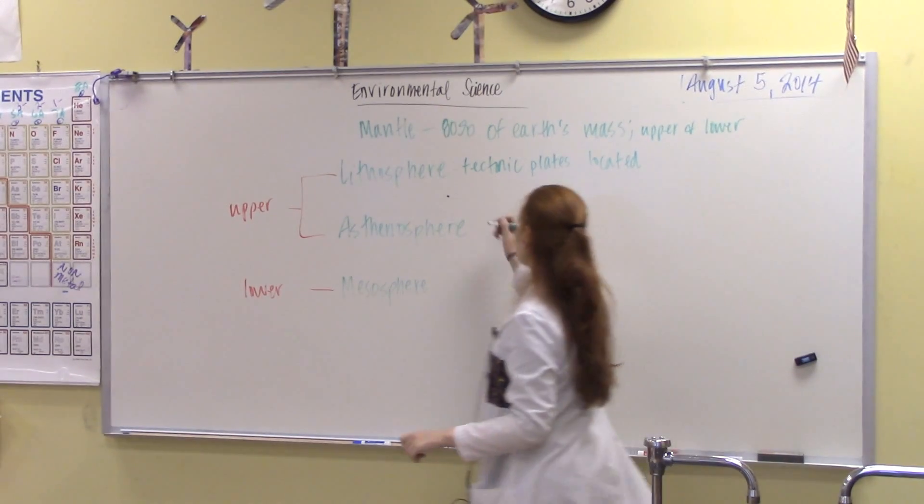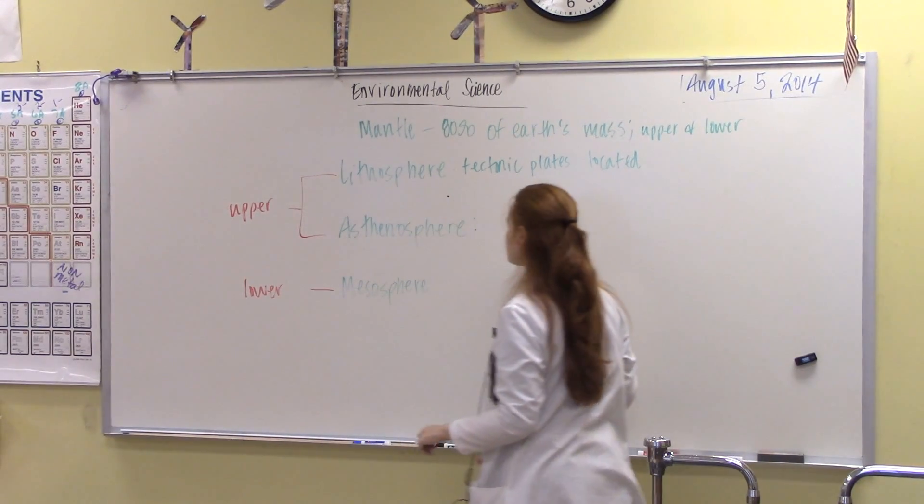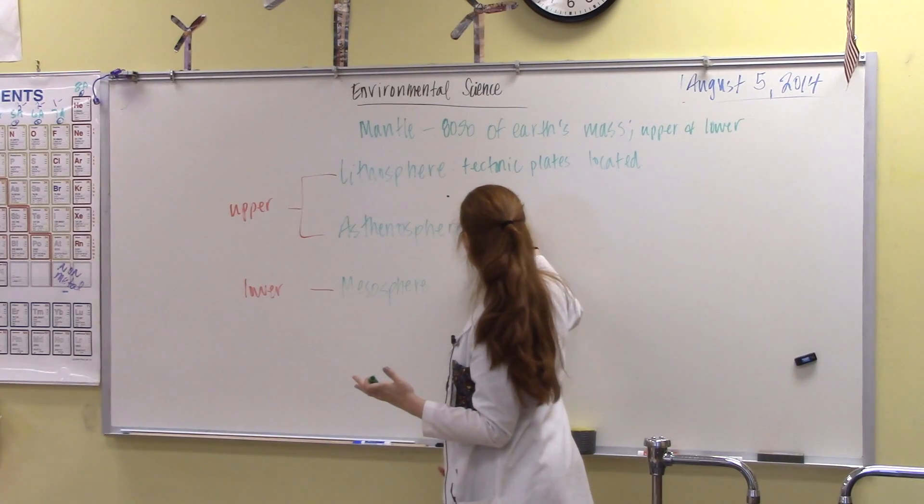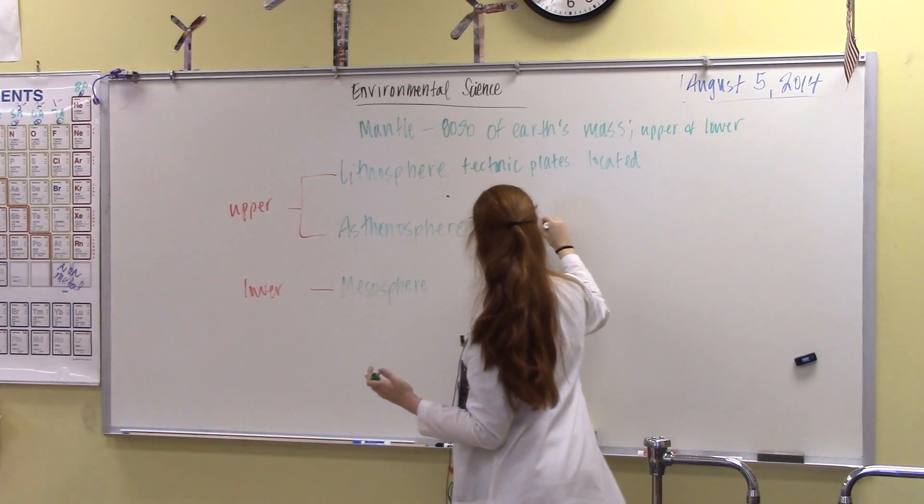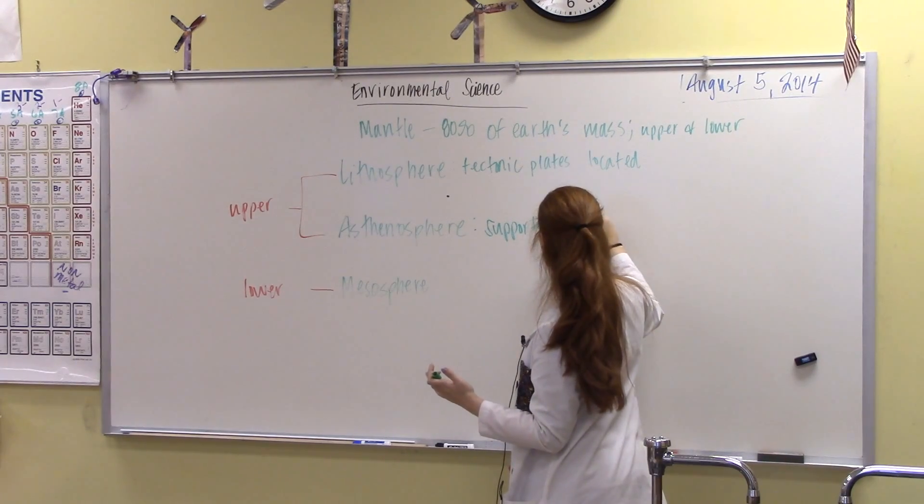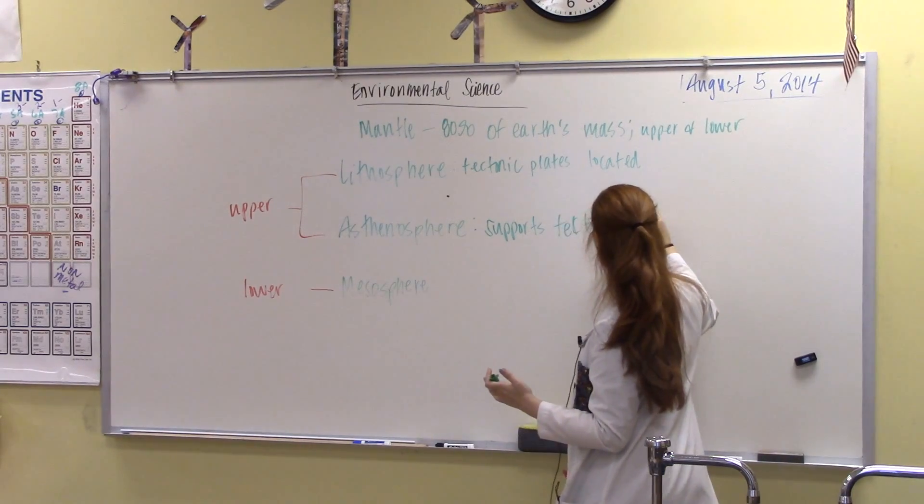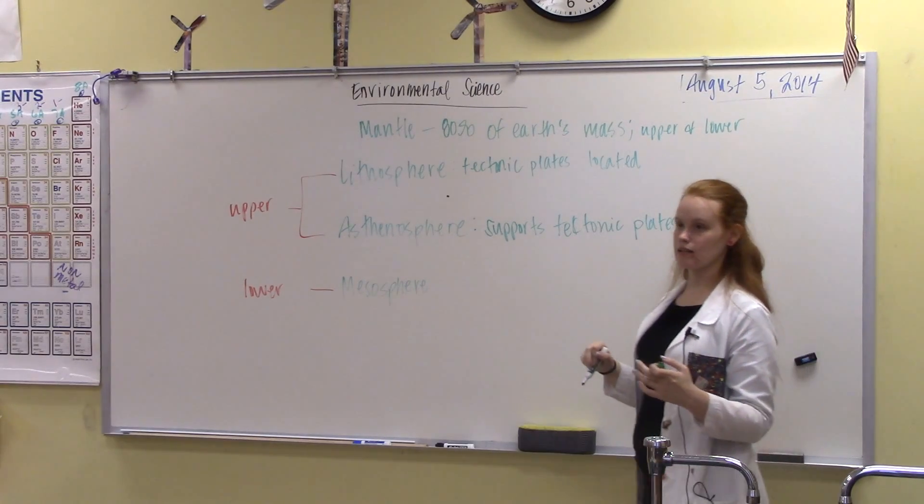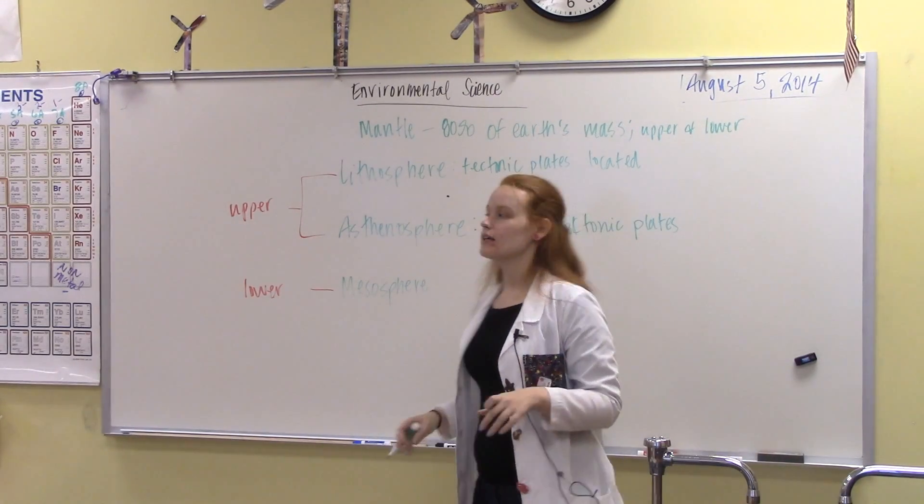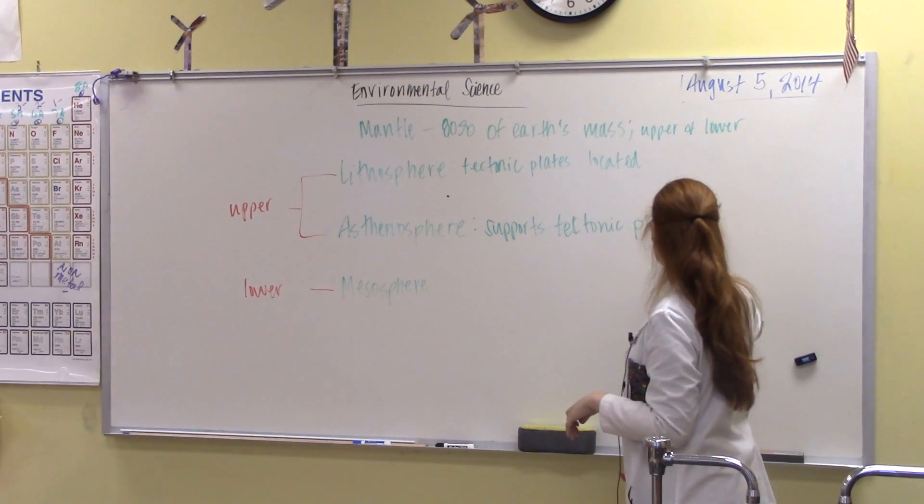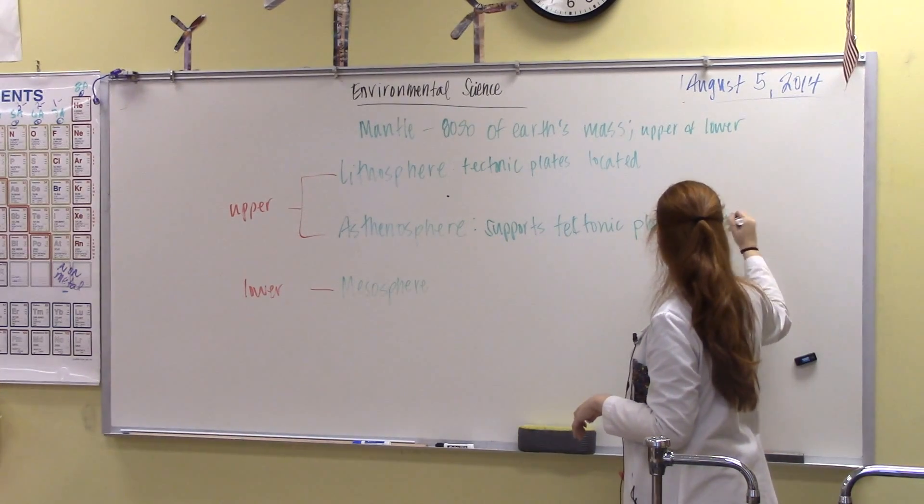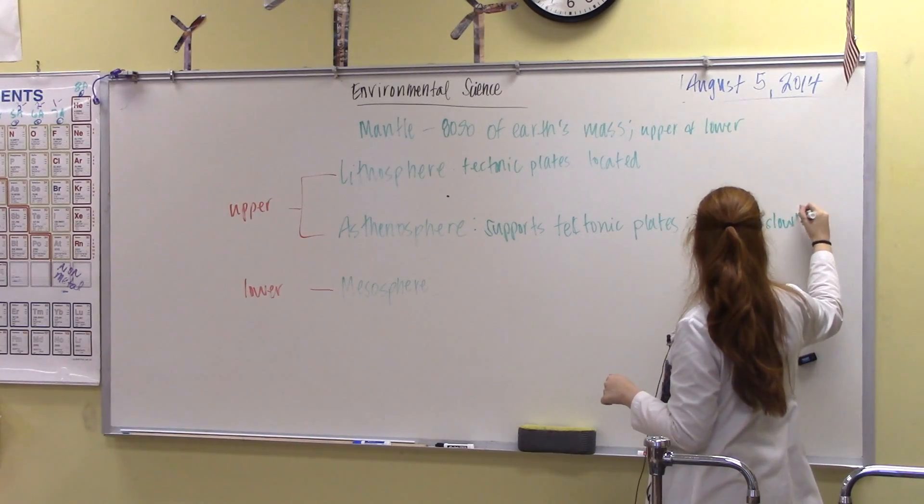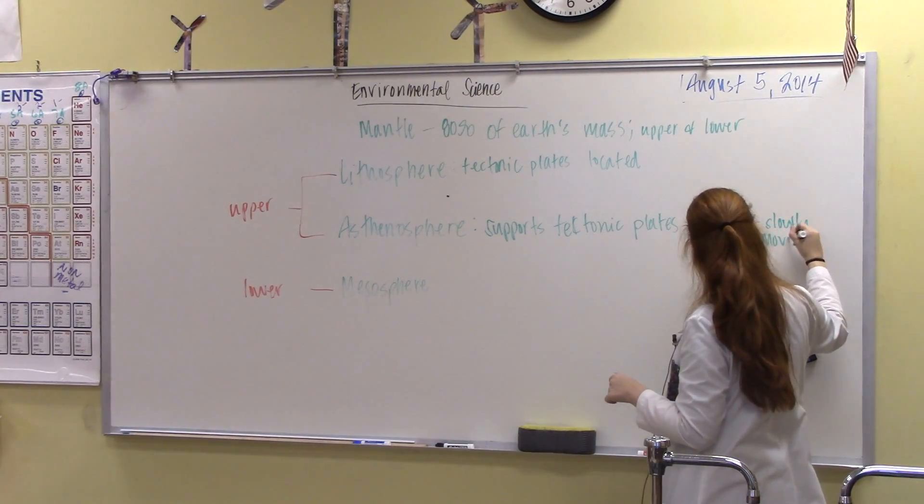Then, we have the asthenosphere. Now, the asthenosphere is where it supports the tectonic plates. Now, not only does it support the tectonic plates, you might be like, well, is it solid or not? Yes, it is solid but it is rocks that are moving. So, it is solid but slowly moving.